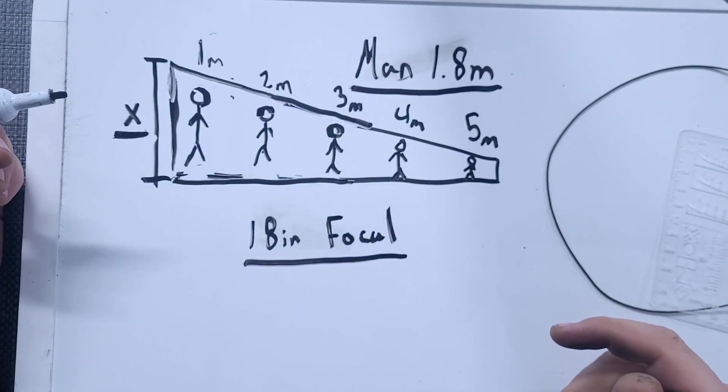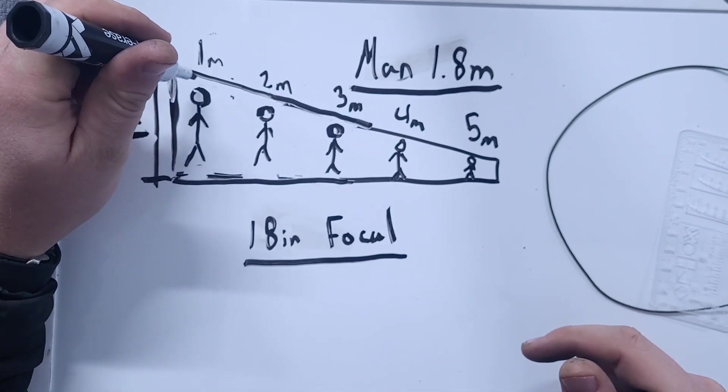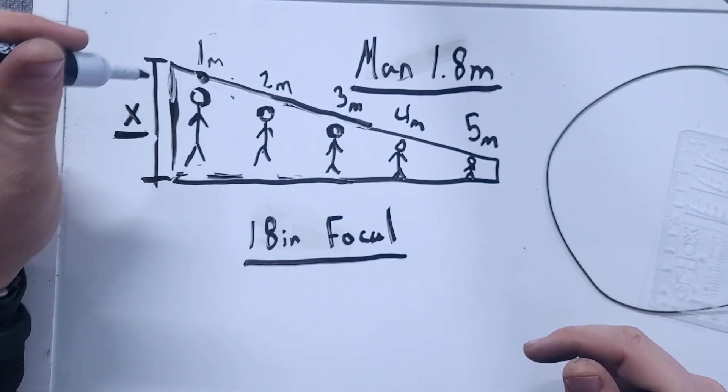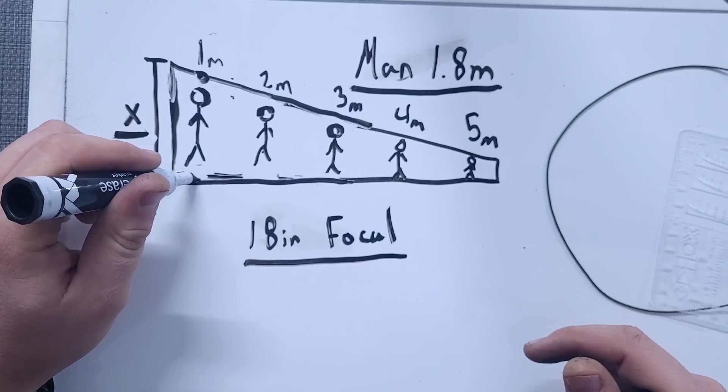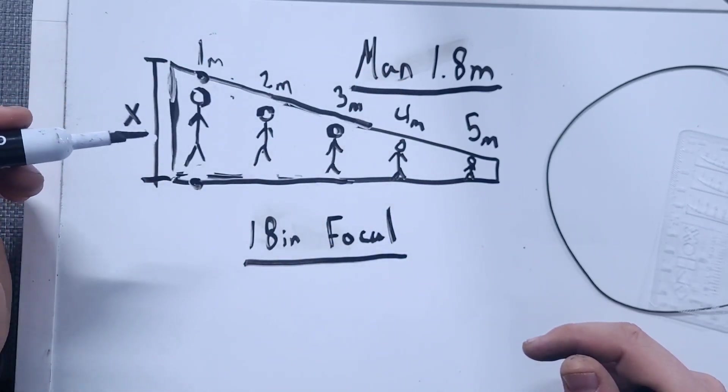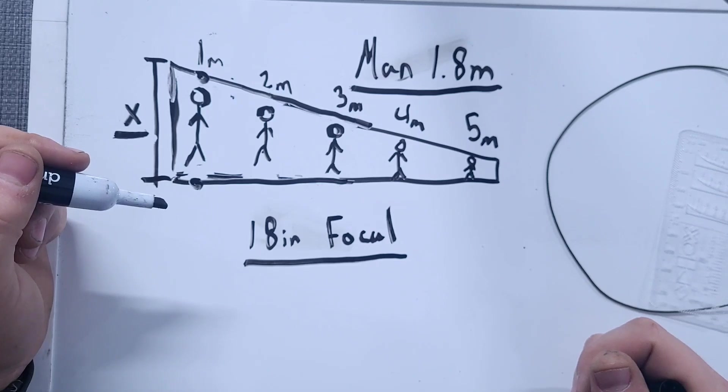When we're using the object in the reticle, all we're doing is lining it up from the tallest point to the lowest point. Wherever it fits in the reticle is where it's going to range at.